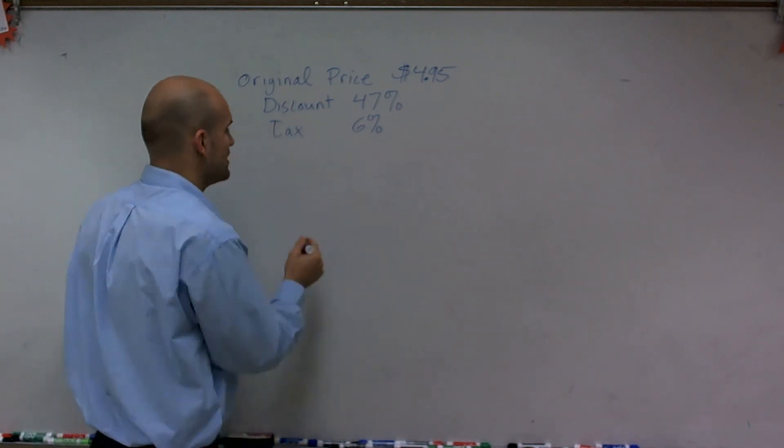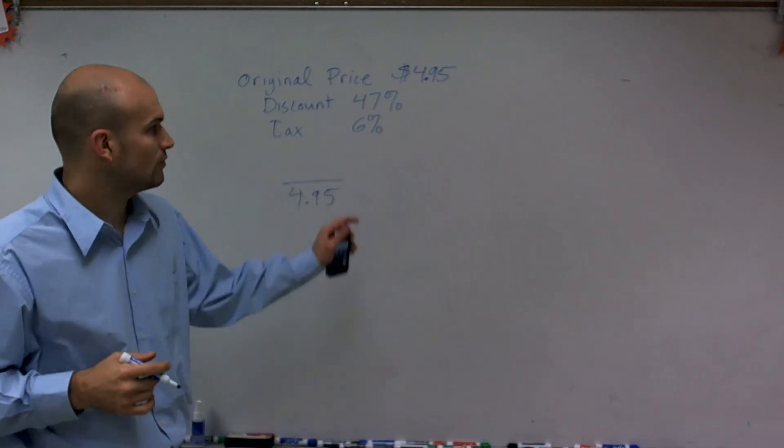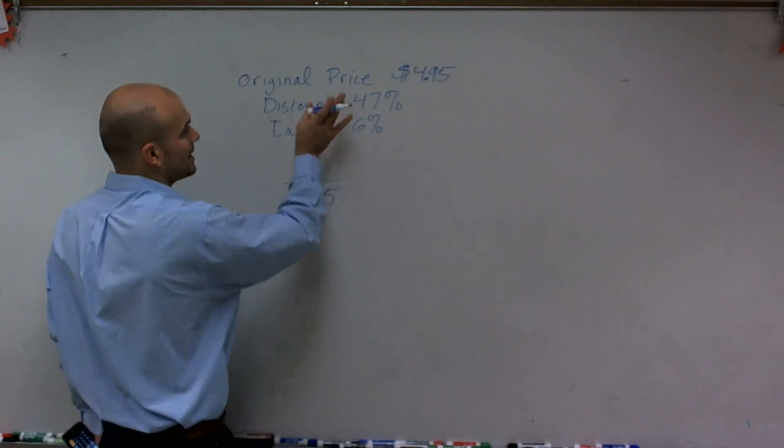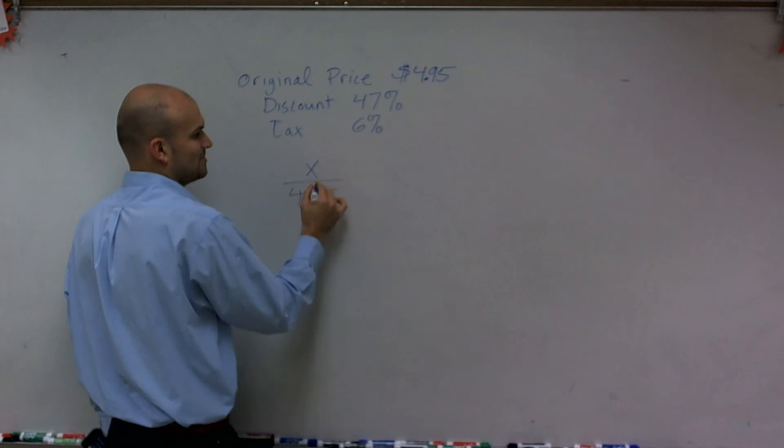The first thing is, if I know my original price is $4.95, I'm going to create a proportion with my discount. I know my original price, but I do not know what the discounted price is going to be, which will be X.